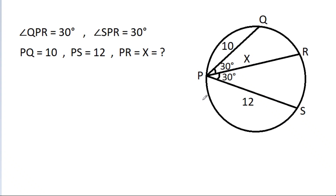In this video, we have given that angle QPR is 30 degrees, angle SPR is 30 degrees, PQ is 10, PS is 12, and PR is X. Then we have to find X.